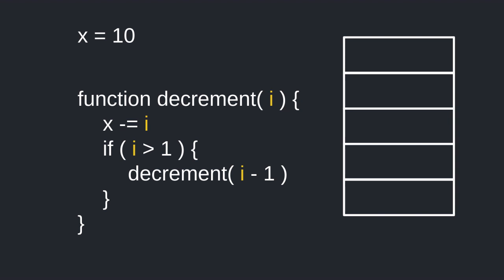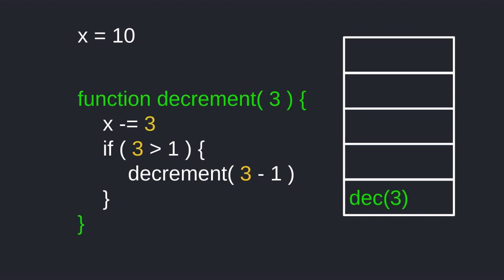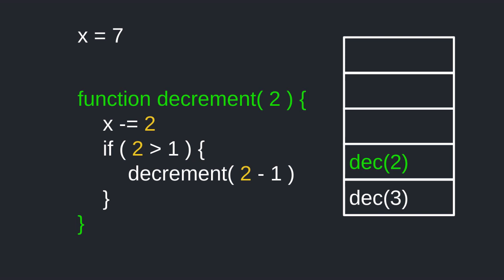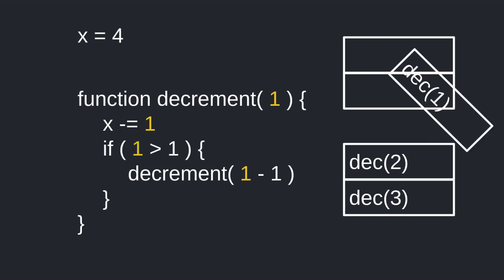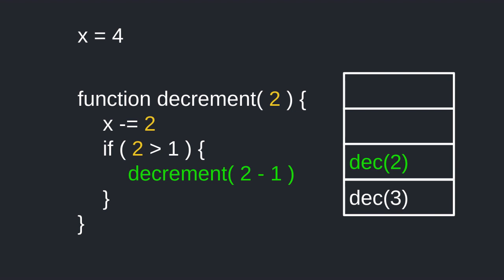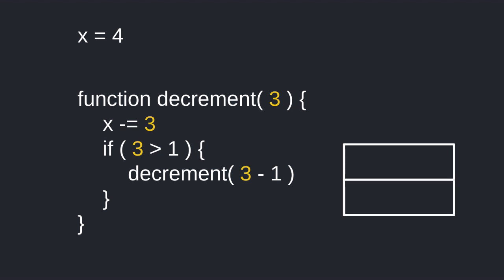On the top you see the current value of the state variable x, which is 10. On the right you'll see a stack of functions that are called and have not finished executing. It decrements the state variable x by 3 so now the value of x is 7. Since 3 is greater than 1 we call decrement again with 3 minus 1, so decrement with input 2 is called. It decrements x by 2 and since 2 is greater than 1 we call decrement with 2 minus 1. We again decrement x by 1, so now x equals 4. Since 1 is not greater than 1, decrement is not called again. Decrement(1) finishes executing and is removed from the stack. Then decrement(2) finishes, also removed. Finally decrement(3) finishes and we are left with the state variable x equals 4.